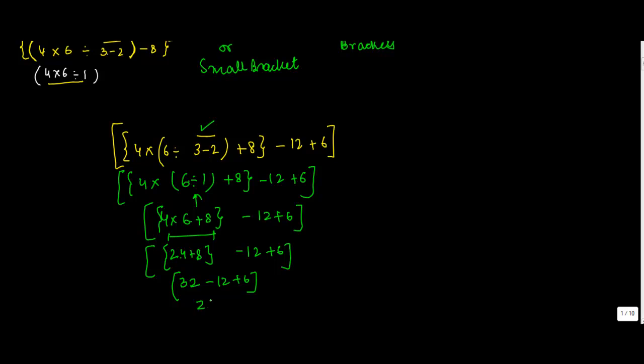32 minus 12 is 20 plus 6 equals 26. Just focus on this video to understand what are the brackets which are to be opened first. So first the vinculum, then the parenthesis, then the braces, and then the square one. How you have to proceed to solve these various operations of addition, multiplication, and division is what I am going to show you in the next video.